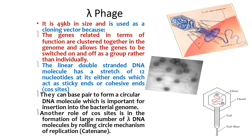Lambda phage is 49 kb in size and is used as a cloning vector because functionally related genes are clustered together in the genome, allowing genes to be switched on and off as a group. The linear double-stranded DNA molecule has a stretch of 12 nucleotides at each end acting as sticky or cohesive ends, also called cos sites. These can base pair to form a circular DNA molecule important for insertion into the bacterial genome. The cos site also plays a role in forming large numbers of lambda DNA molecules through rolling circle replication, called concatemerization.